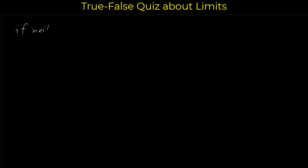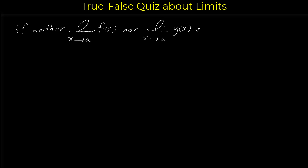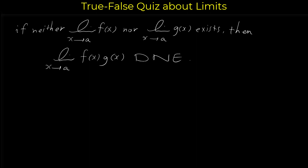The third statement: if neither the limit of f(x) as x approaches a nor the limit of g(x) as x approaches a exists, then the limit of f(x)·g(x) as x approaches a also does not exist. Is this true or false? Consider f(x) as a piecewise function: f(x) = 1 when x > 0 and f(x) = -1 when x < 0.